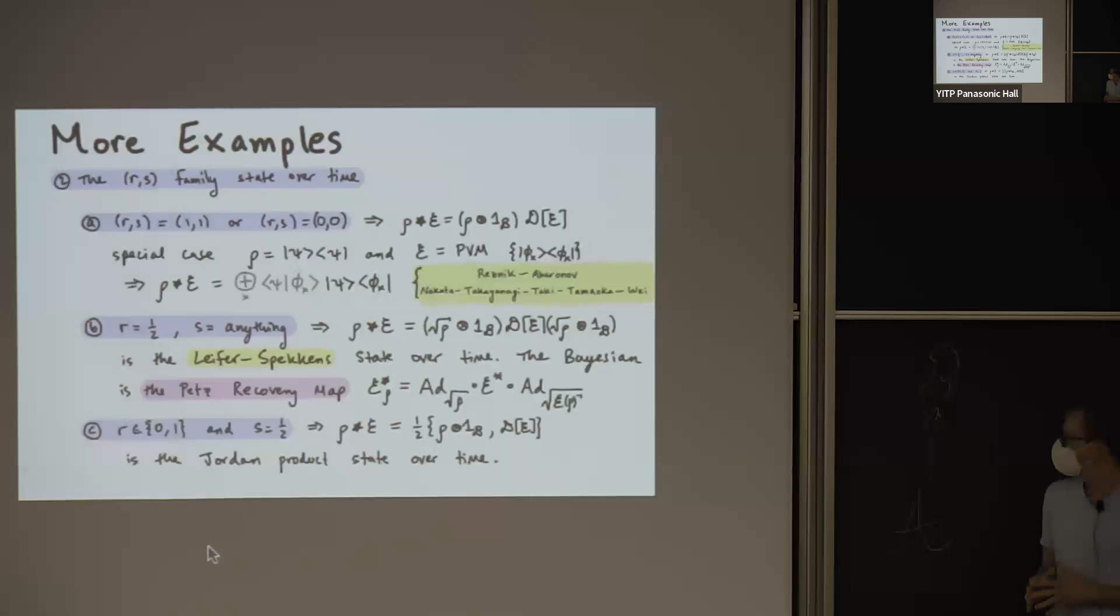Another special case of interest is when you choose another type of symmetric product. And in this case, the symmetric product is the Jordan product. So you're not taking any square roots. You're not doing anything odd about the density matrices or channels involved. You just take this Jordan product. And an interesting point to make is that this is a Hermitian if rho is a density matrix and your channel is CPTP.